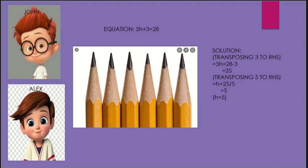The solution: first, transpose 3 to the RHS. Therefore, 5H equals 28 minus 3, which is 25. Then transpose 5 to the RHS, giving us H equals 25 divided by 5, which equals 5. Therefore, H equals 5.